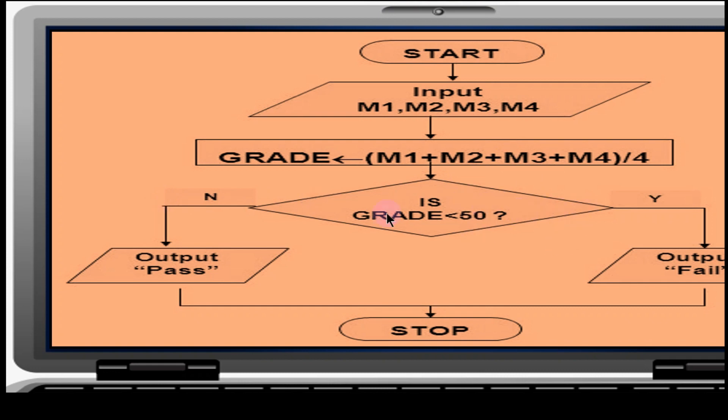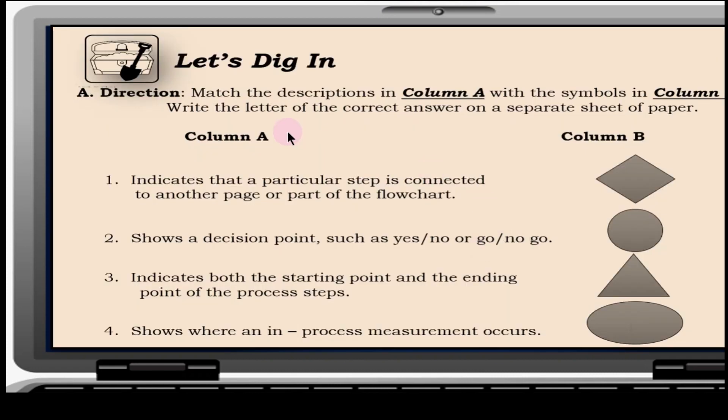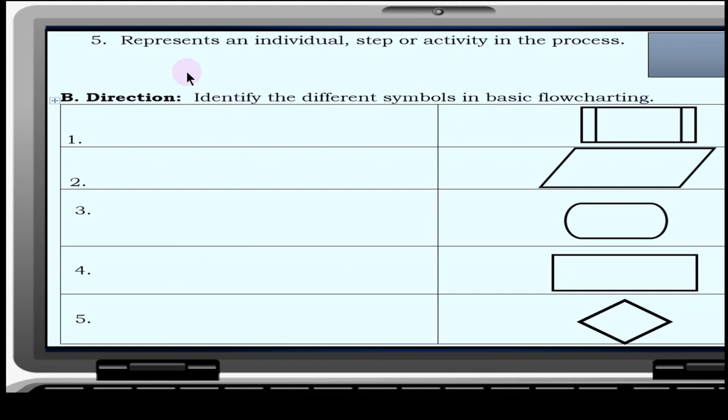Next, let's dig in. This is going to be your assignment. You're going to answer this one in your module, then take a picture and submit it to our Google form. Letter A: Match the descriptions in column A with the symbols in column B. Number one, number two, number three, number four, and number five.